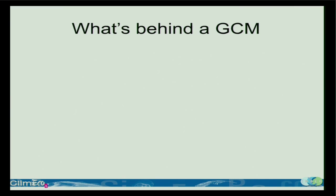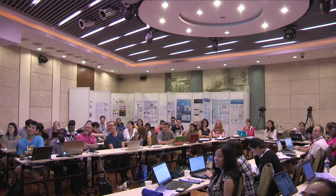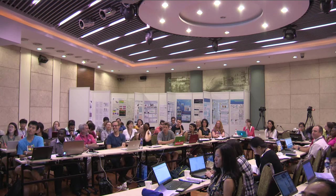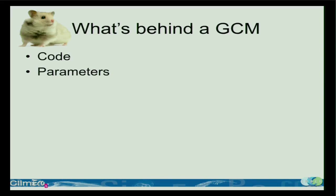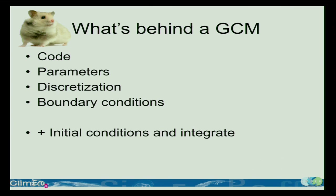So I'd like to quickly go through what's actually behind that curtain. What goes into a GCM? What does it really look like? How do you build one? How do you run it? Rather than think of it as this all-powerful machine, I'd like you to think about it as a hamster instead. The first part of what goes into a GCM is the code. There are also some parameters, you have to think about the discretization, and there are boundary conditions. Once you have all those things, you just need some initial conditions and you can go ahead and integrate the model.